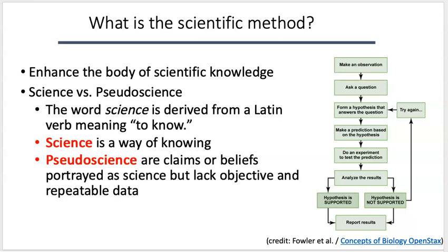An example of pseudoscience is astrology. Astrology involves forecasting Earth and human events by observing and interpreting the stars and the sun. From the outside it might appear very scientific — there's a lot of data that may support it — but as you look more closely, you find that it really does lack the objective, repeatable data that can be generated using the steps of the scientific method.